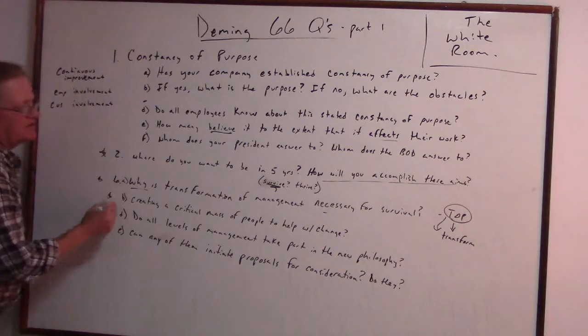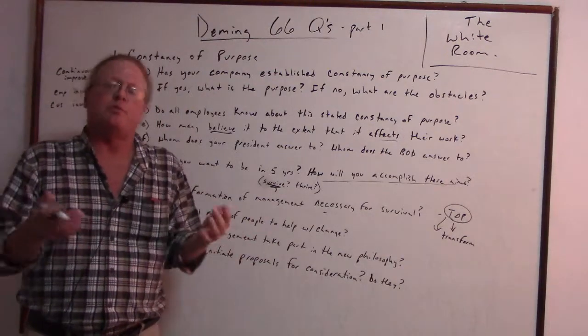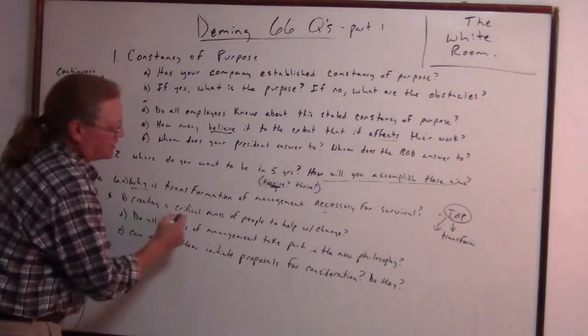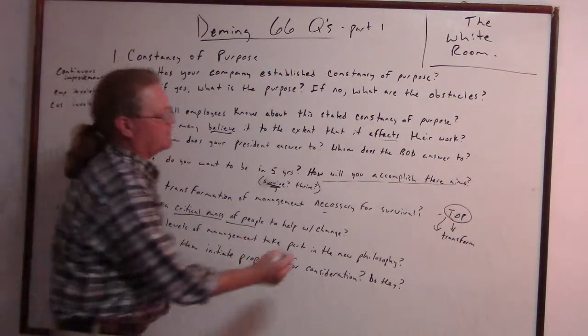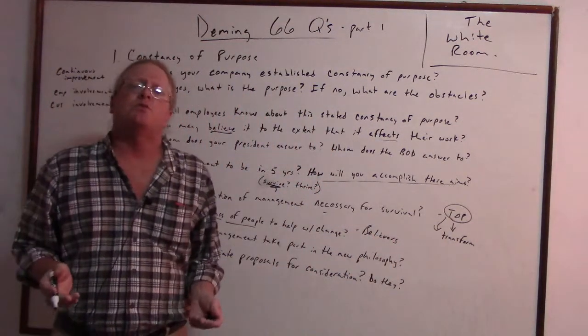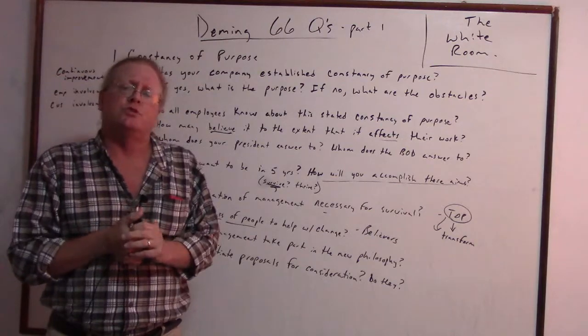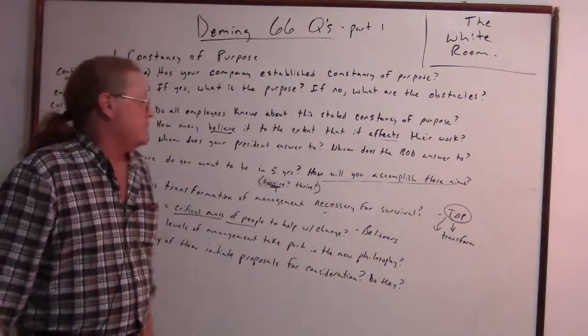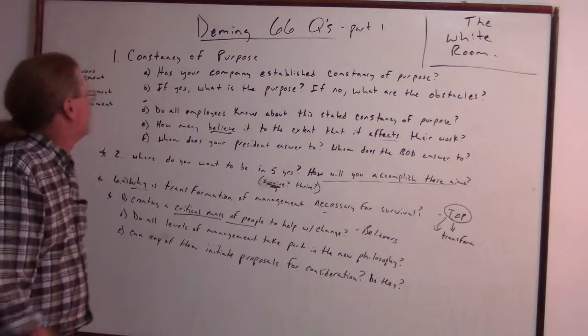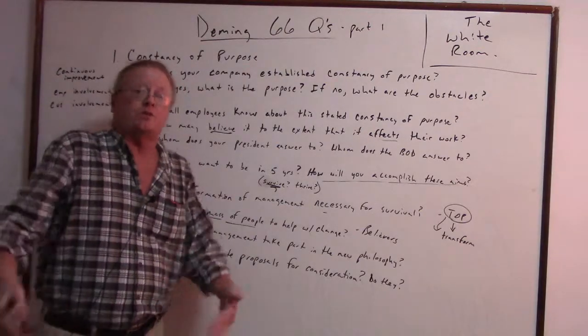Creating a critical mass of people to help with change. We need a critical mass of people, a minimum amount of people to keep the thing going, the transformation going. And are you creating a critical mass of people? What we need here is believers. It's difficult for managers to change. It's difficult to go from an authoritarian jerk to a caring, supportive coach. So we have to get a critical mass of people, a minimum amount of people to keep the fire burning here and get them on board with continuous improvement and trying to better serve the employees so they serve the customer.